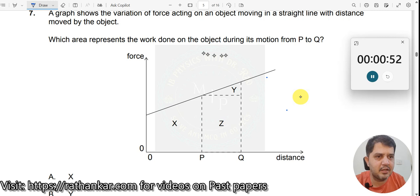Which area represents the work done on the object during its motion from point P to point Q? This is a force-distance graph asking what represents the work done. Work done is always given by force multiplied by displacement.